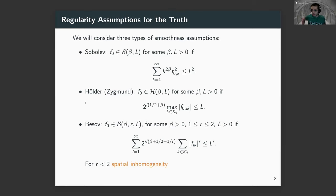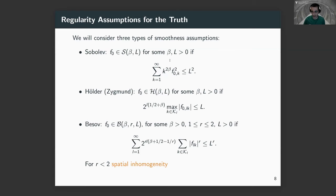I will show you contraction results where we assume smoothness of the truth. We have three types of assumptions. The first is the usual Sobolev one: the truth has Sobolev regularity beta. We will use Sobolev assumptions when studying the single-index orthonormal basis setting with L2 contraction loss. When considering L-infinity contraction with a wavelet basis, we use Hölder regularity assumptions on the truth.